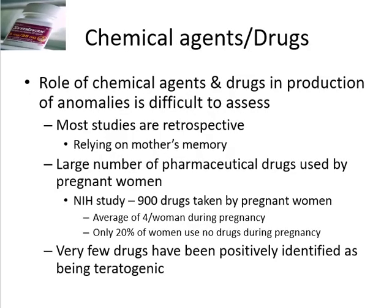Moving to another environmental factor: chemical agents and drugs. The role of chemical agents and drugs in production of anomalies is difficult to assess, and most studies are retrospective, relying on mother's memory. A large number of pharmaceutical drugs are used by pregnant women — for example, an NIH study found 900 drugs taken during pregnancy, with only 20 percent of women using no drugs during pregnancy. Very few drugs have been positively identified as teratogenic.